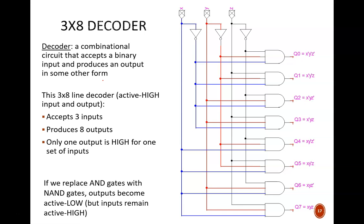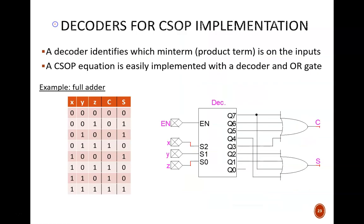We then explored one particular type of decoder called line decoders. These activate one output line. But that is not the only type of decoder or use of a line decoder. One other neat application is using a decoder for implementing circuits based on a canonical SOP equation.